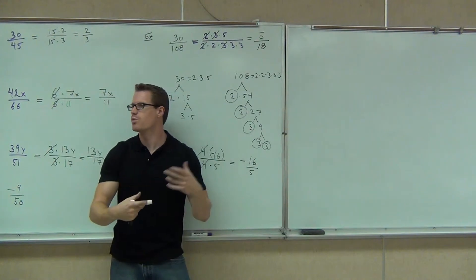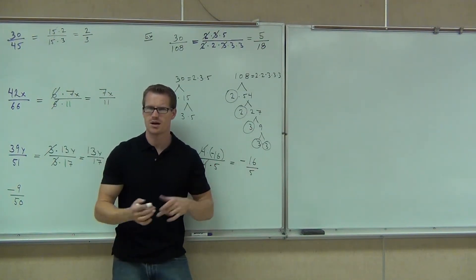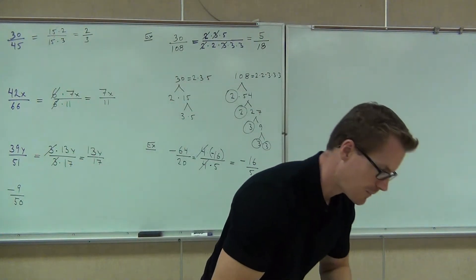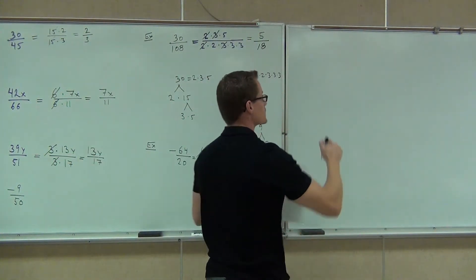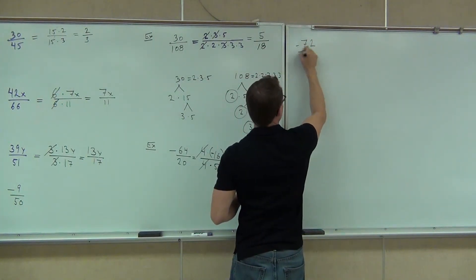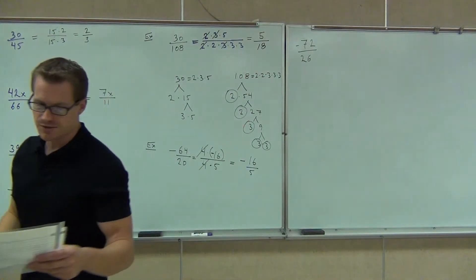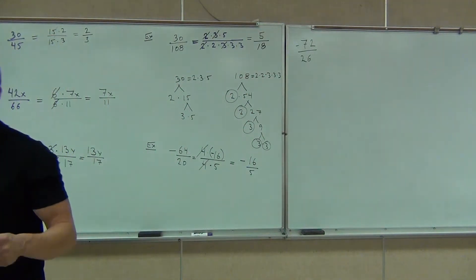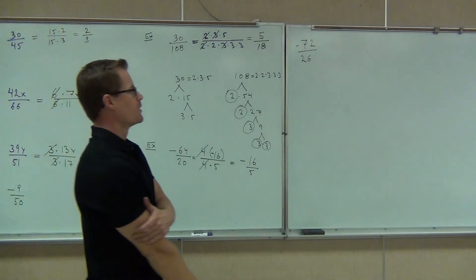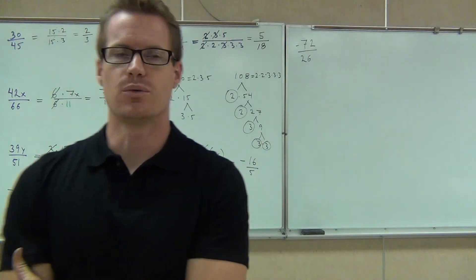Writing this as a mixed number means you go one more step and do 3 and 1 fifth in this case. Do you see the difference? With that in mind, try this example: negative 72 over 26. We're looking for the biggest common factor — the number that divides both the numerator and denominator. We're going to write that as a multiple of those numbers and then simplify. Remember, don't lose that negative.